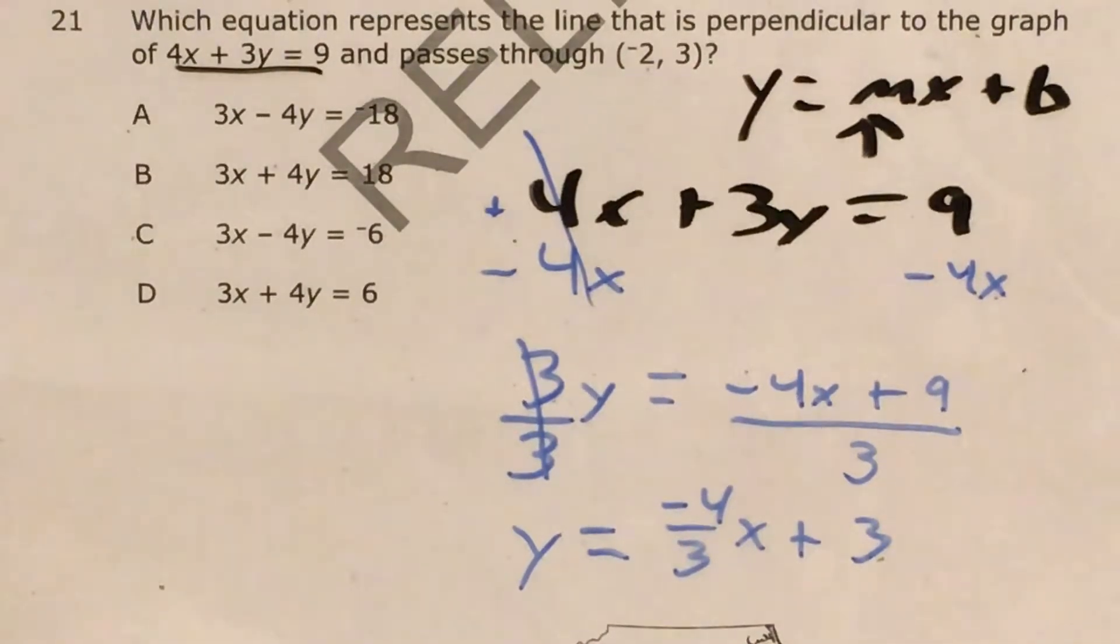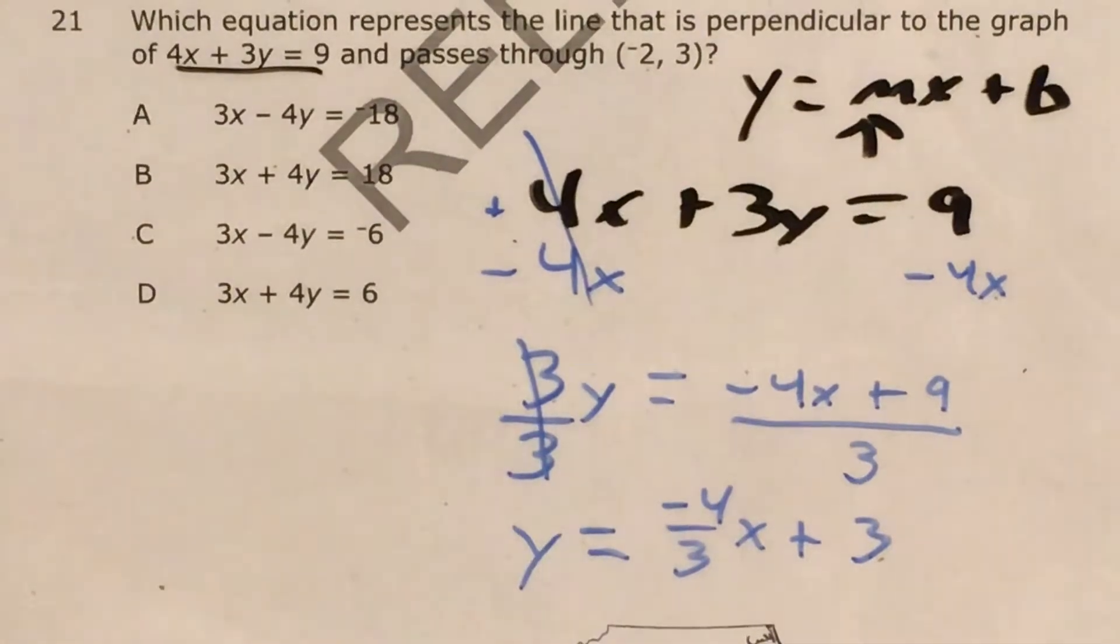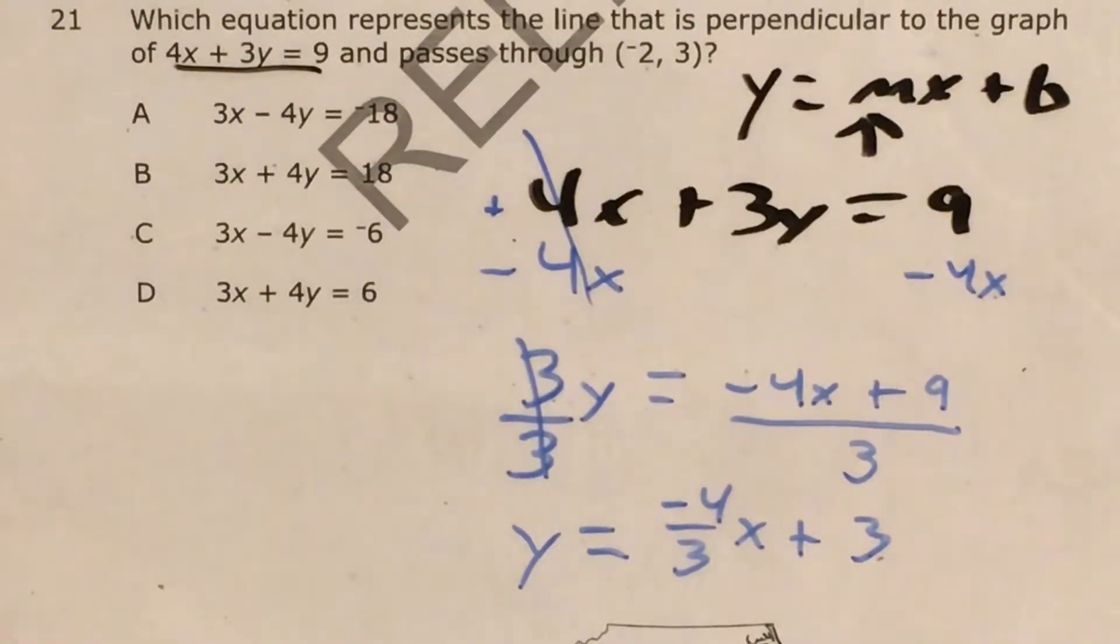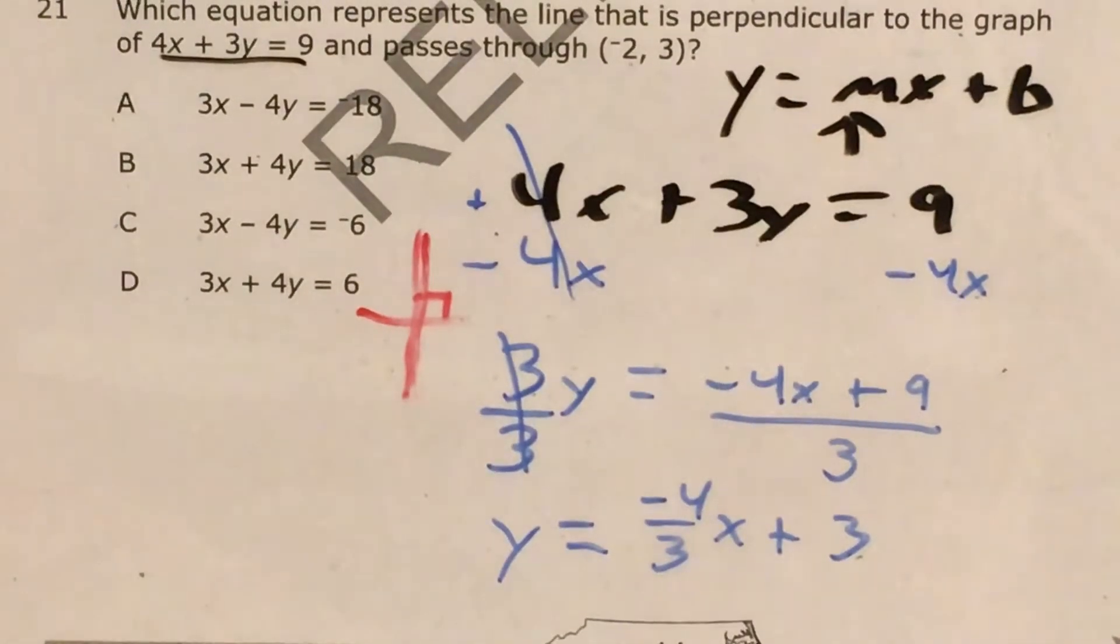So now, what on earth does it mean for two slopes to be perpendicular? Because I'm sure you remember from geometry that perpendicular lines mean they make right angles. Of course, that's very poorly drawn, but I think you get my meaning.